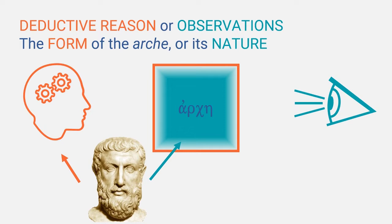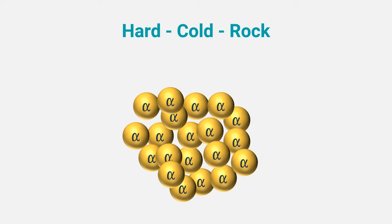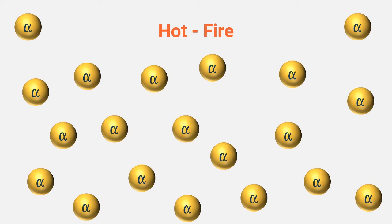For example, if there was indeed an archae, whether it's water or the apeiron or air, that would ultimately mean that there were little particles of archae, right? As in, if you were to break it down to its smallest components, you would get little bits of pure archae. And Anaximenes said that you get different materials depending on how far apart these particles are. The closer together those particles, the harder, the colder and the more rock-like the substance was. And if it were further apart, the hotter and more fire-like it was.